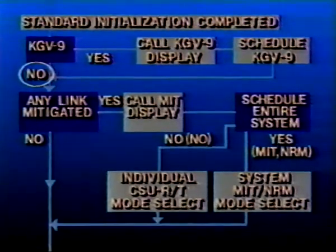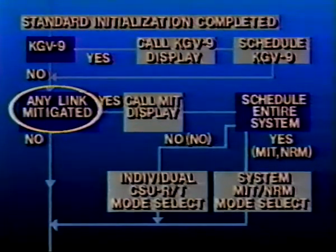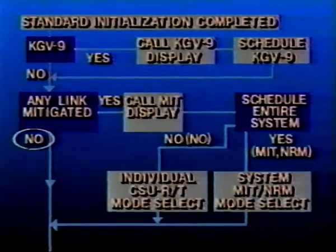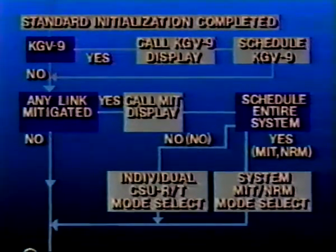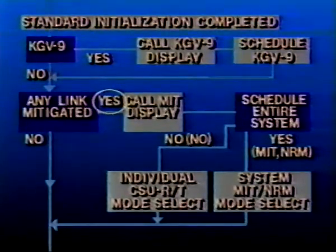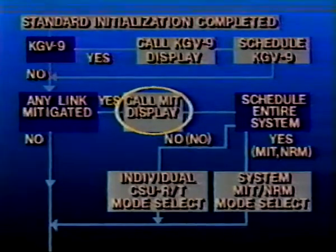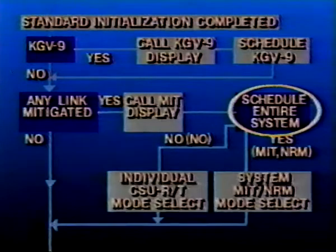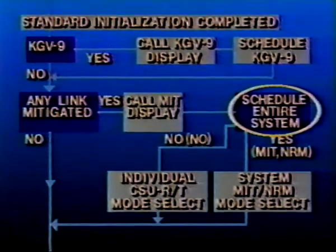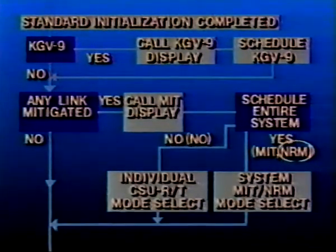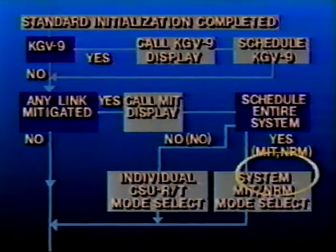The next decision to make is whether or not any of the links will be mitigated. If the choice is not to mitigate at this time, no operator action is required, and you are ready to enter a mitigated system into the net in the normal mode. To mitigate the CSU or any COM-RT, call the mitigation display by typing MIT and pressing the return key. Then either put the entire system in the mitigation mode by typing MIT and pressing return, or type NRM and press return to change the entire system to normal mode.